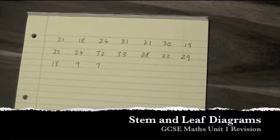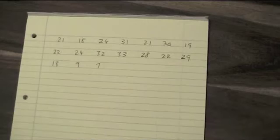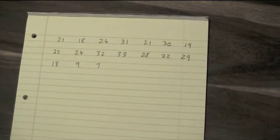Drawing a stem and leaf diagram. The first thing to do with a stem and leaf diagram is to look at your numbers and ignore just the final digit.